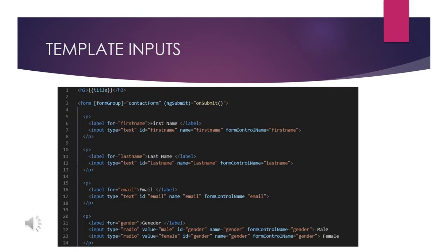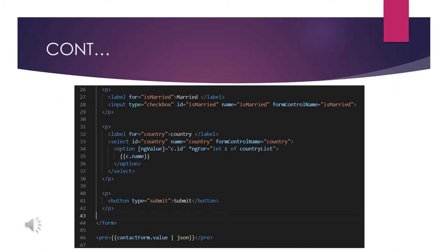In the template file, I am rendering a title from the component class. I have a form with a formGroup binding called contactForm. The submit is handled by onSubmitForm. I have a list of values — first name, last name, email, gender — all embedded with the formControlName attribute using matching control names. Additional values include isMarried, and a country dropdown with a formControlName of country.